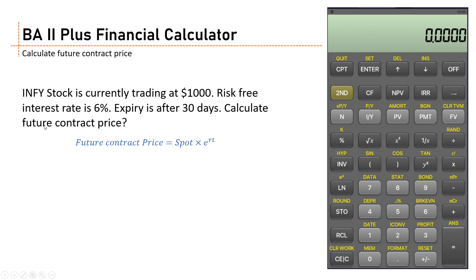We normally use this formula: Future contract price equals spot times e raised to the power rt. We will use the same equation to get the value using the BA II Plus financial calculator.